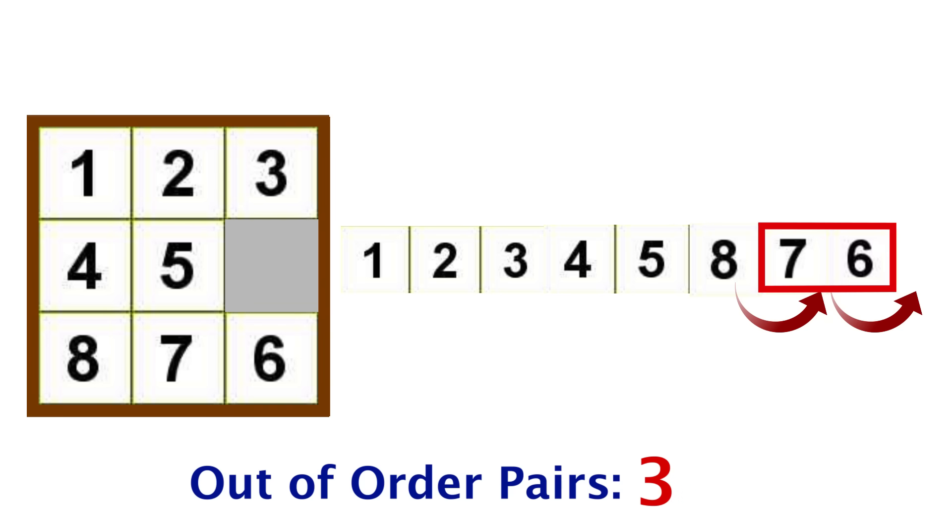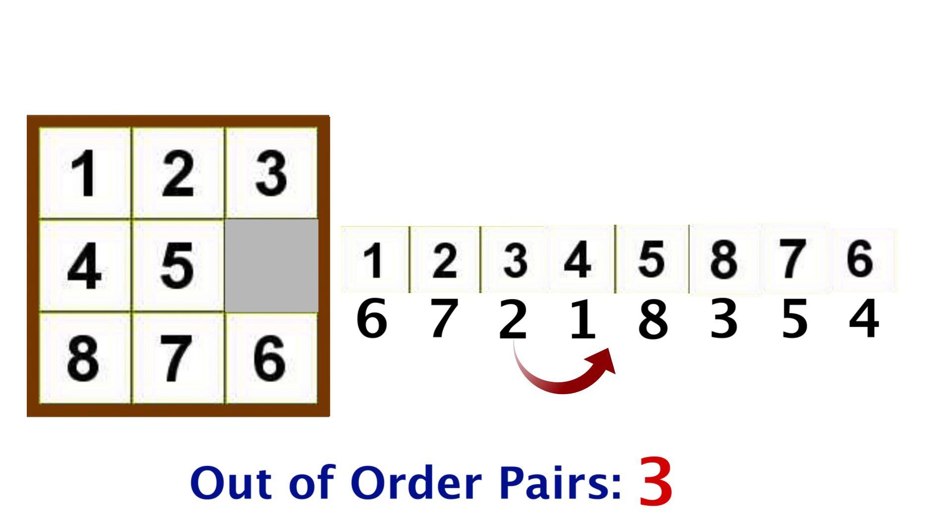So we did a vertical move, the number moved two places backward, which changed our out of order pairs by 2, 1 for each move. In fact, no matter what the order, every time a tile makes a single move along our number line, the out of order pairs will either increase by 1 or decrease by 1.